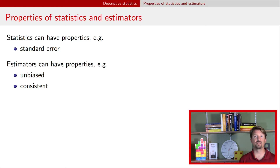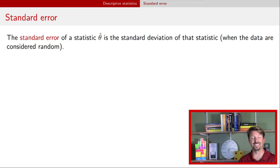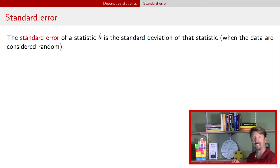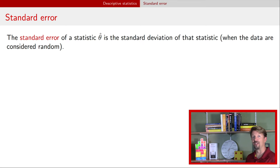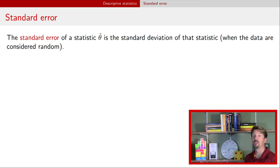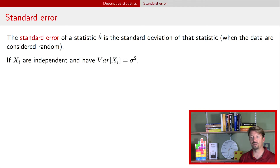To start with, let's talk about standard error. The standard error is just the standard deviation of a statistic when we consider the data to be random. As a reminder, the notation we have here is the parameter theta with a hat over it. That parameter theta is a population parameter, and the hat or caret over top of it provides an indication that this statistic is an estimator of that population parameter. So theta-hat is a function of the data, and the data are random. The standard error is the standard deviation of the statistic, and we're going to show an example looking at the sample mean.